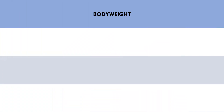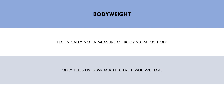This leads us onto our next assessment tool, which is body weight. Body weight is technically not a measure of body composition, because it doesn't actually provide any indication of what tissues are increasing or decreasing. For example, a trainee could gain 2kg of muscle, and another trainee could gain 2kg of fat, and both trainees would see an increase of 2kg on the scale. Furthermore, body weight naturally fluctuates from day to day based on water retention, glycogen stores, and digestion.